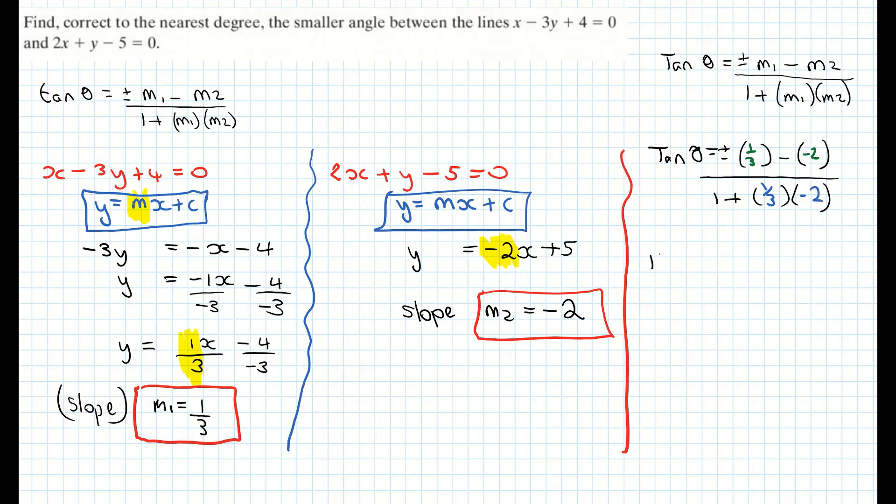Evaluating the top line of my fraction I get tan theta is equal to plus or minus 1 third minus minus 2. Well 1 third plus 2 is what it's asking me there now because the 2 minuses make a positive. So that's giving me 7 over 3 all over 1 plus 1 third multiplied by minus 2 is giving me 1 third.